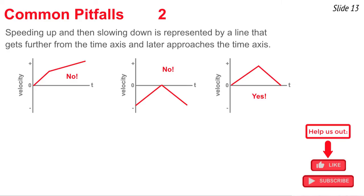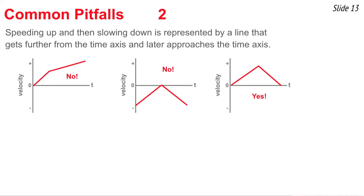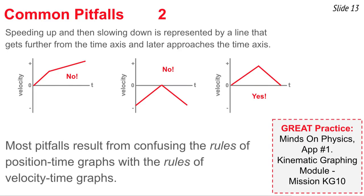These pitfalls mostly result from confusing the rules for position-time graphs with the rules for velocity-time graphs. Every time you get a graph, identify whether it's a position-time or velocity-time graph, then apply the correct rules. For great practice, try the Minds on Physics app number one — the kinematic graphing module, specifically KG10, which provides rigorous practice on speeding up, slowing down, and common misconceptions.